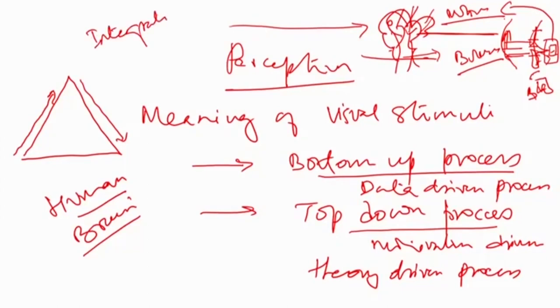Whereas taking all this information together and comparing it to a prototype of a tree stored in long-term memory is the top-down process. Basically, most perceptual processes require integration of both the top-down and the bottom-up process. So let us start with understanding what the bottom-up processes in perception are and look at some of the models used for understanding them.